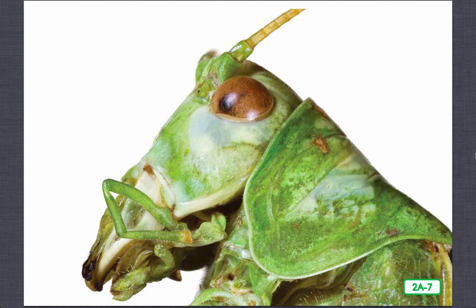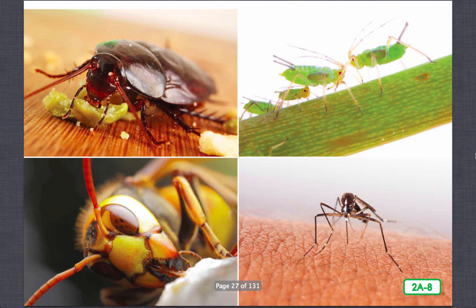You and the cricket both use your mouths to taste and eat. What are the parts of your mouth called? We've got a tongue, we've got teeth, taste buds, and lips. Look at the variety of insect mouth parts. Some look like sponges, others look like scissors or needles.